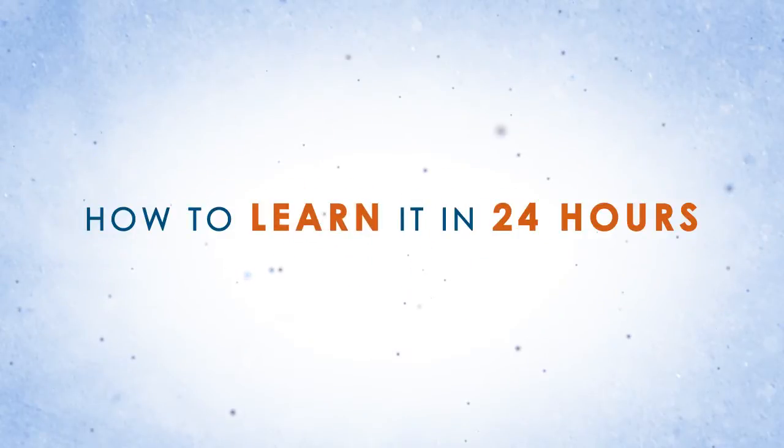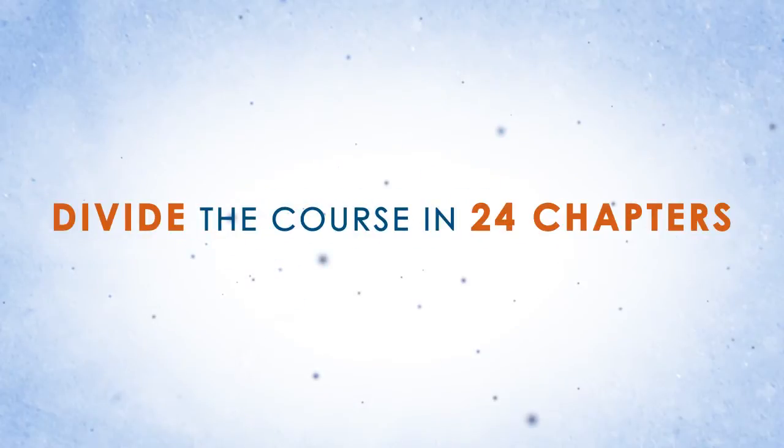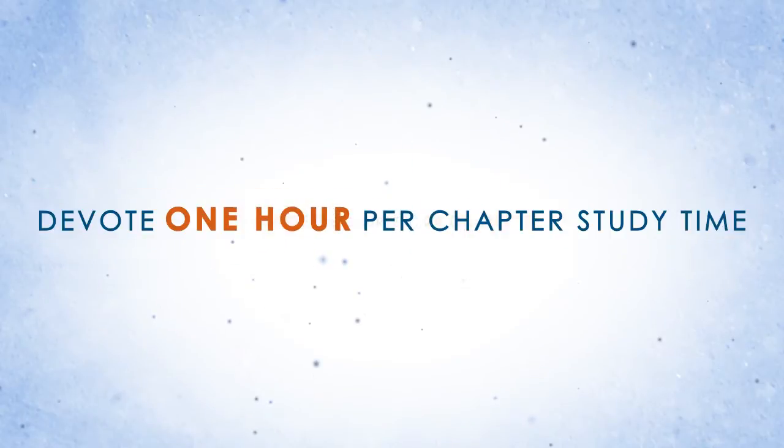Don't try to bite off the entire book at once. So how do you learn it in 24 hours then? The Rapid Learning System divides the course into 24 chapters and one hour study time per chapter.